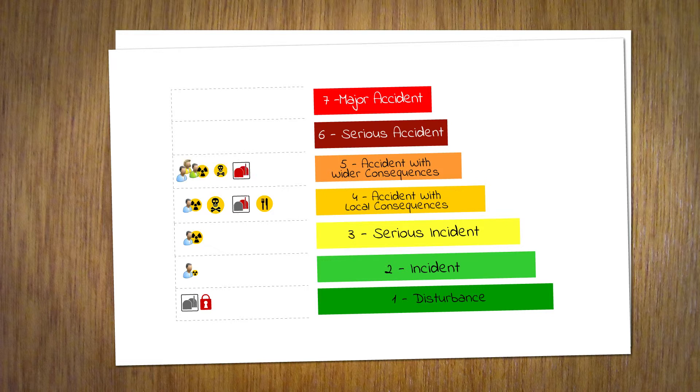In Stage 5, the reactor core and the protective barriers are severely damaged. The release of radioactive material may already be so high that individual civil protection measures are taken.